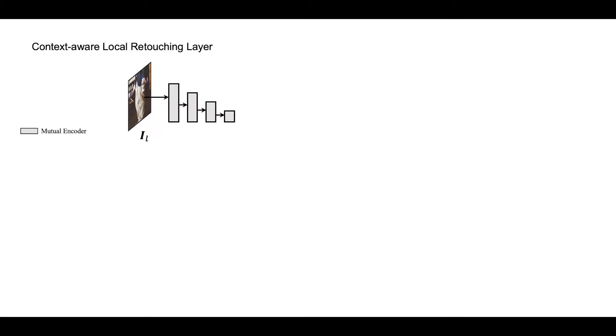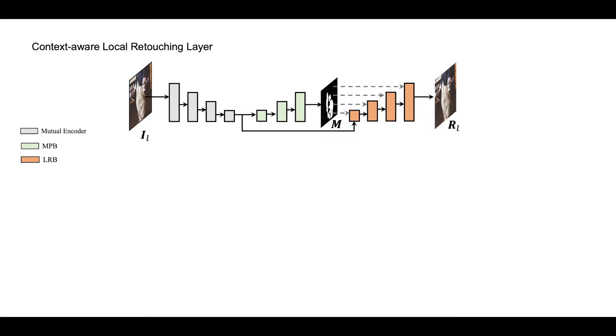Specifically, LRL adopts a multi-task architecture which consists of a mutual encoder, a mask prediction branch, and a local retouching branch. MPB aims to automatically predict the mask of the target region to guide subsequent local region generation. In LRL, a local attentive module is proposed, where the local semantics and texture of the target region and the global context can be fully captured and aggregated to achieve consistent local retouching.